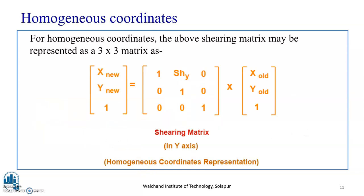We can represent this matrix in homogeneous coordinates. The shearing matrix in the y axis in homogeneous representation using a 3×3 matrix is: [x-new, y-new, 1] = [1, shy, 0; 0, 1, 0; 0, 0, 1] × [x-old, y-old, 1]. The same can be applied for the x axis, where shy is replaced by shx.